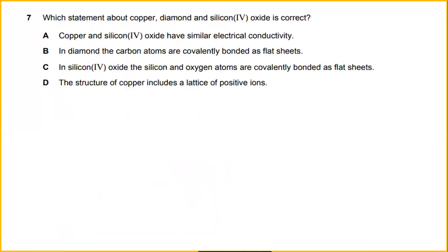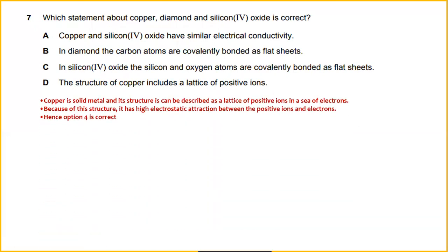Which statement about copper, diamond, and silicon dioxide is correct? Copper is a solid metal and its structure can be described as a lattice of positive ions in a sea of electrons. So the answer will be the structure of copper includes a lattice of positive ions. Because of this structure, it has high electrostatic attraction between the positive ions and electrons. So the answer will be D.